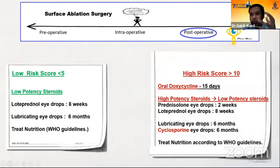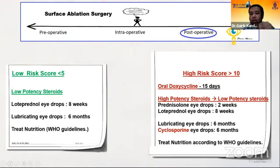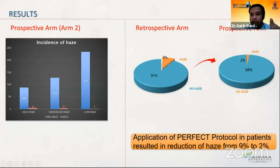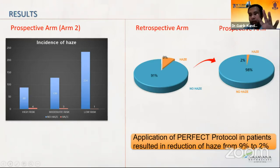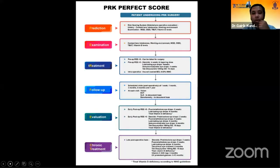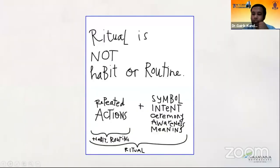Post-operatively, for a score less than 5, you can start with a low-potency steroid — either loteprednol or fluorometholone — and lubricating drops. If the score is greater than 10, treat inflammation for a longer period, starting with a high-potency steroid for two weeks and then stepping it down, continuing lubricants longer, and using topical immunomodulators such as cyclosporine. There was a significant reduction in the prospective arm: in the retrospective study the incidence of HAZE was 9%, but utilizing our scoring, the presence of HAZE was significantly reduced to 2%. This was published recently in the Indian Journal of Ophthalmology, where it can be a useful way for all clinicians to stratify and improve outcomes post-PRK.